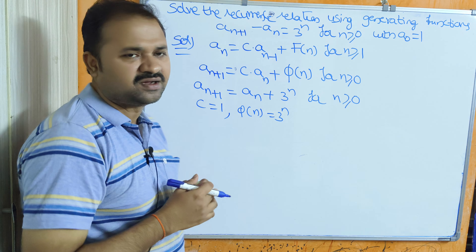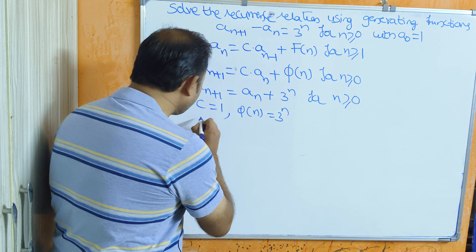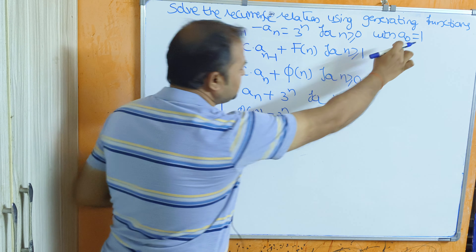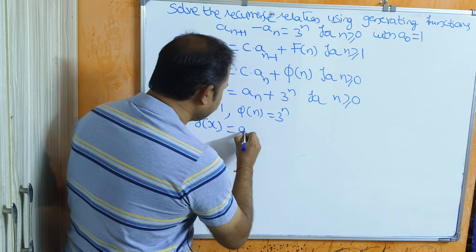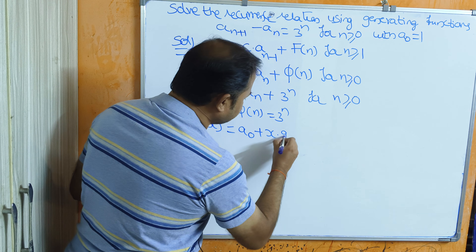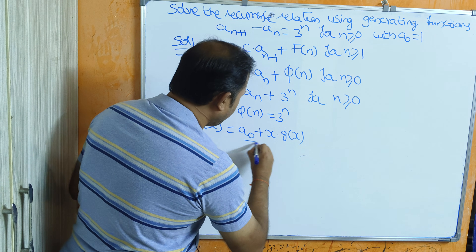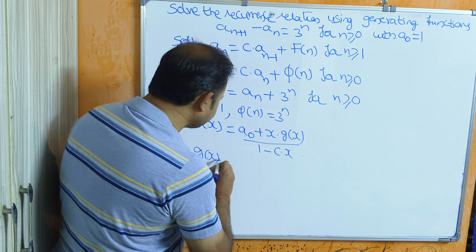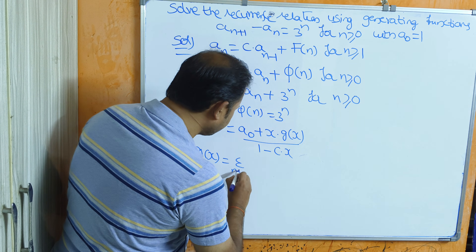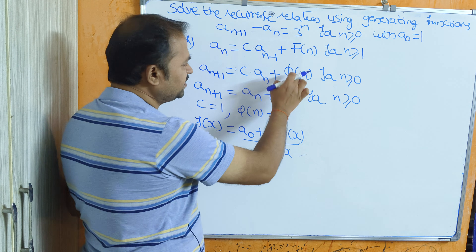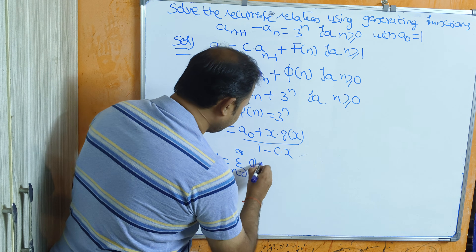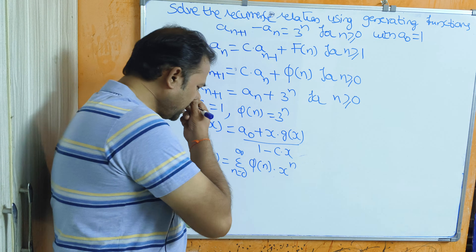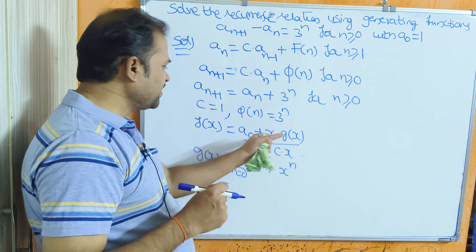Now we have to use generating functions. We need to remember these formulas. The first formula is f(x) equal to a(0) plus x times g(x), all divided by 1 minus c times x. The second formula is g(x) equal to sigma n=0 to infinity of f(n) times x^n.